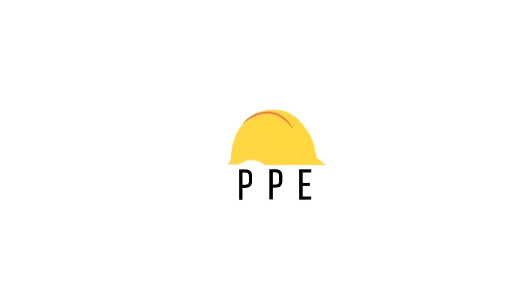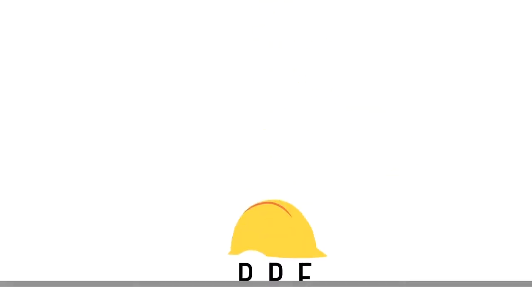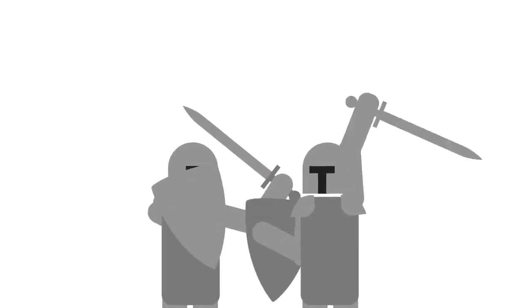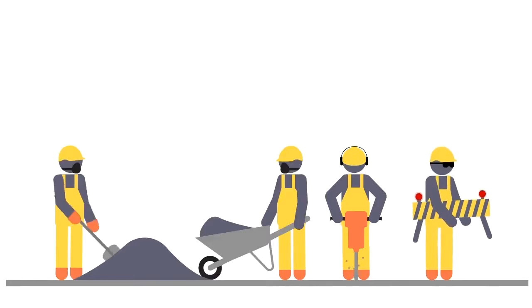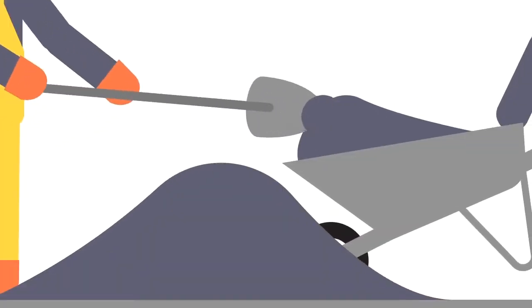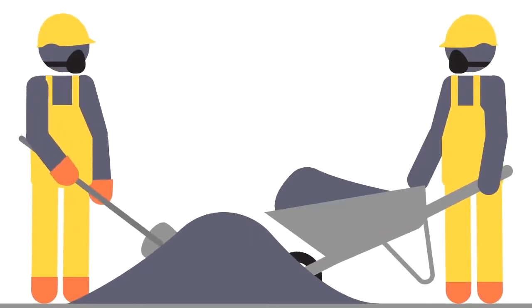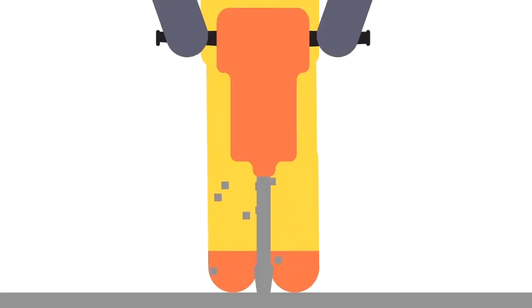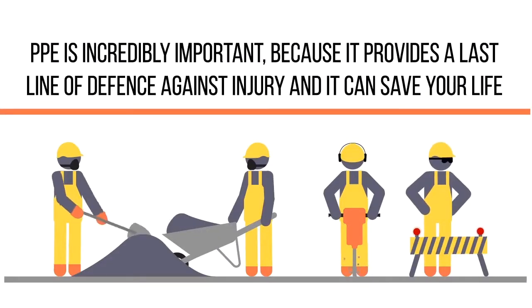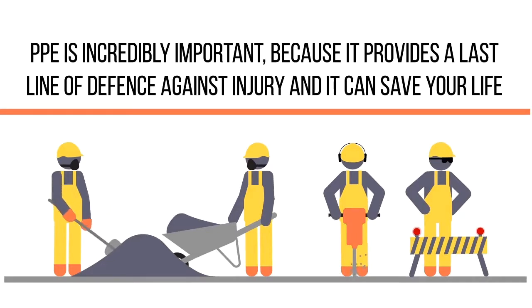Personal protective equipment, or PPE for short, is equipment that will protect you against health and safety risks at work. It's not a new idea — people have used PPE for centuries to protect themselves. But in the modern workplace, PPE includes items like safety helmets, gloves, eye protection, face masks, and safety footwear. PPE is incredibly important because it provides a last line of defense against injury and it can save your life.